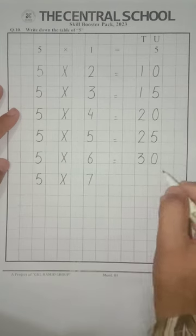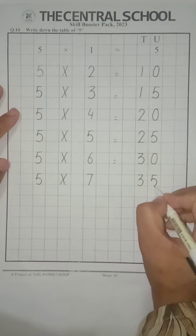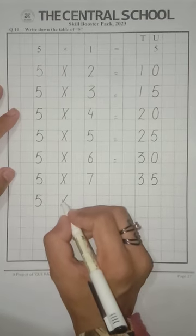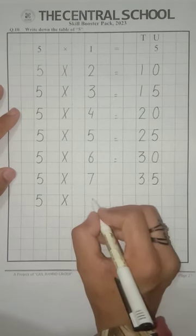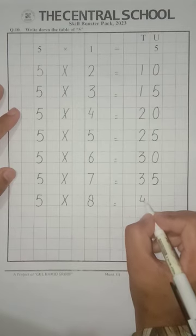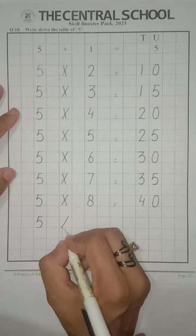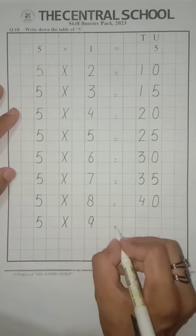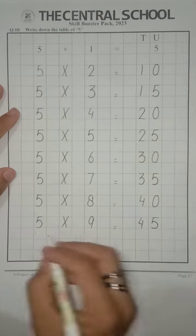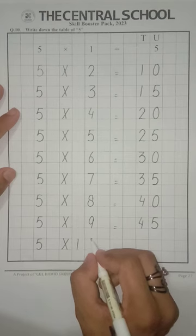5 sevens are 35. 5 eights are 40. 5 nines are 45. 5 tens are 50.